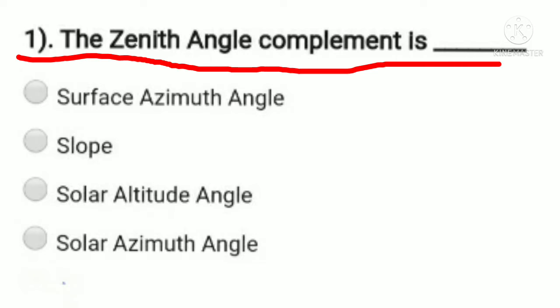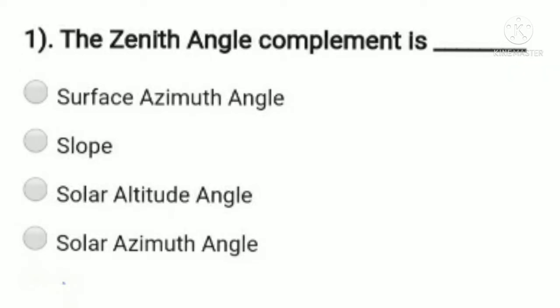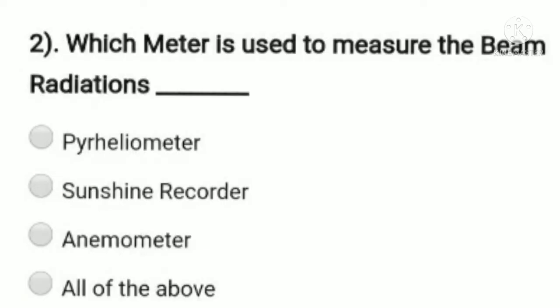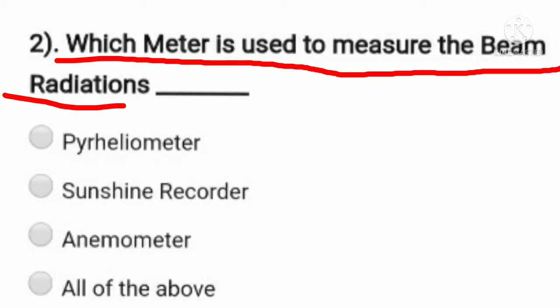The first question: the zenith angle complement is — option A: surface azimuth, option B: slope, option C: solar altitude angle, option D: solar azimuth angle. We know the zenith angle is related to the solar altitude angle, so option C, solar altitude angle, is the answer.